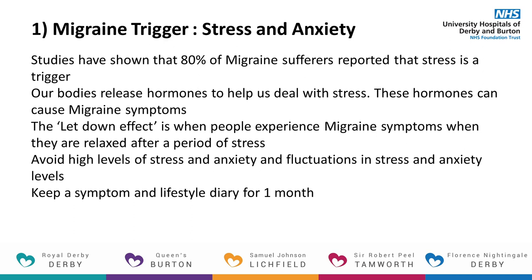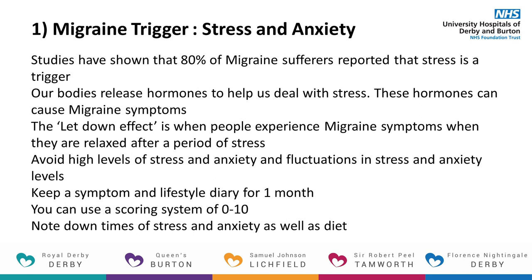Note down how badly you are experiencing your symptoms, using a score out of 10 with 10 out of 10 being the worst the symptoms can be and 0 out of 10 being no symptoms at all. You can also note down if there are times when you are particularly stressed, anxious or busy. We will talk later about using this diary to also identify dietary triggers. Try to work out if there is a relationship between your lifestyle and your symptoms. If you find that stress is one of your triggers, taking action to avoid excessive stress can be helpful.